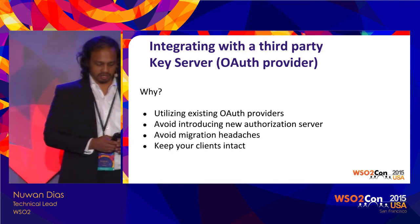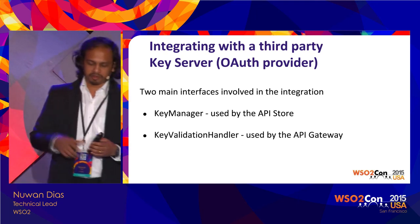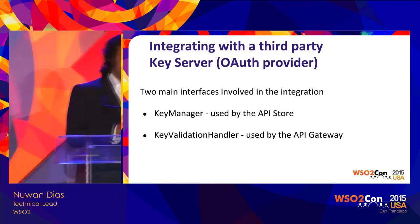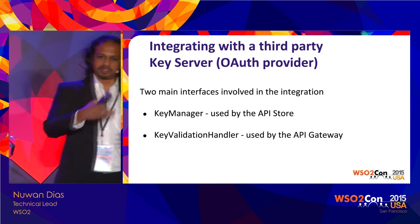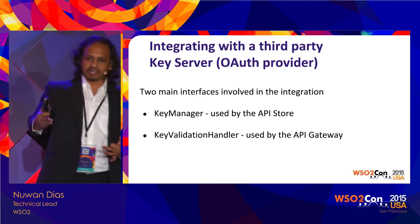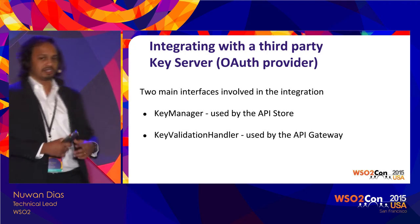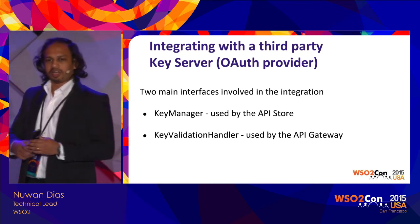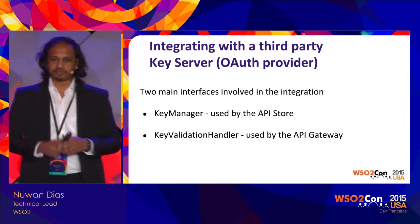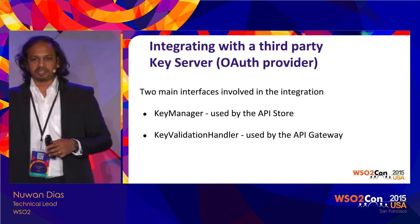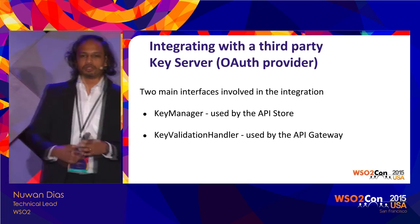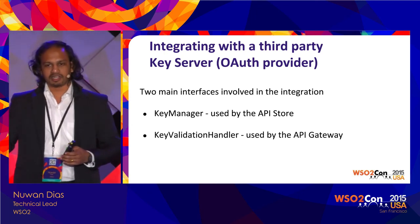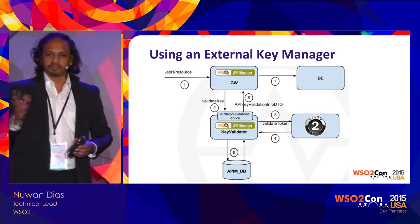If implementing or using your own OAuth server, there are two interfaces to look out for. In the context of the API Manager, two components interact with the Key Manager: the API Store for registering applications, and the API Gateway for generating and validating access tokens. The KeyManager interface is used primarily by the API Store for registering applications and getting application credentials. If you have your own OAuth server, you need to provide an implementation of that interface. Similarly, for the Gateway to collaborate with your OAuth server, you need to implement the APIKeyValidationHandler interface.